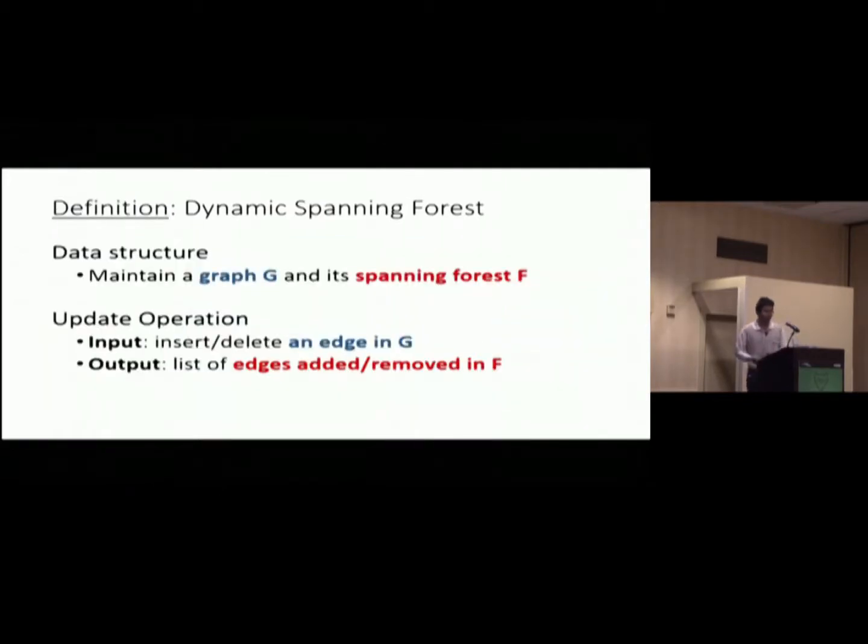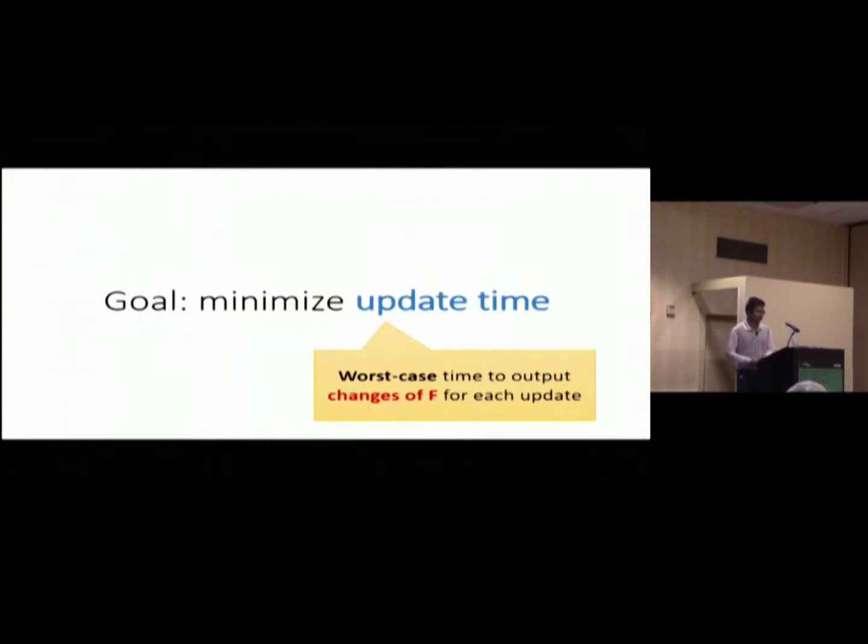So the next update comes. And you update the graph. There's no change here, so you don't output anything. Next update comes. You update, change the tree, and output the change. So this is the setting. So basically, we want a data structure that maintains a graph G and its spanning forest F. And for each time, you can delete or insert an edge. And you want to output the list of edges changed in the tree or forest. And the goal is to minimize the update time, which is the worst case time to output the change after each update.